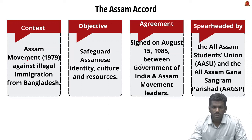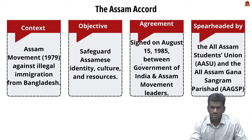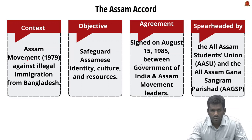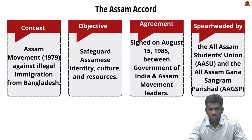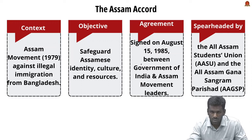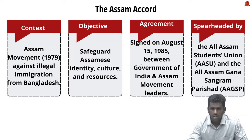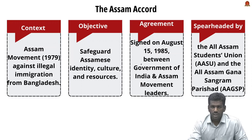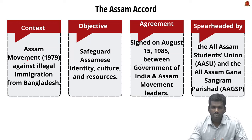The Assam movement was headed by the All Assam Students' Union and the All Assam Gana Sangram Parishad. This movement started in 1979 and was driven by concerns about the influx of illegal migrants from Bangladesh — then East Pakistan. The main objective was to safeguard the identity, culture, and resources of the indigenous Assamese population.